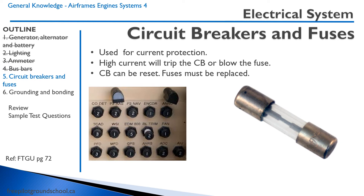Circuit breakers and fuses are used for current protection. If a piece of electrical equipment fails, it might start drawing an excessive amount of current, which could cause a fire. The circuit breakers and fuses sense this — the circuit breaker will trip or the fuse will blow. A circuit breaker can be reset, whereas a fuse must be replaced. In most aircraft, circuit breakers are used instead of fuses.